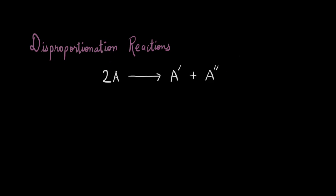We're going to look at disproportionation reactions. These are a type of redox reaction where a compound in an intermediate oxidation state forms products in different oxidation states — one higher and one lower. So if we start with A having oxidation number N, the products will have oxidation states greater than N and less than N.